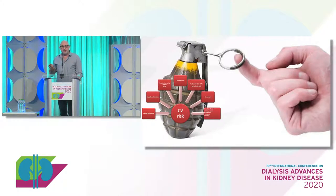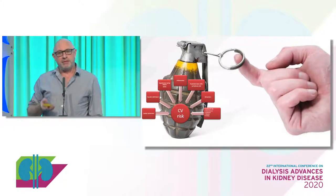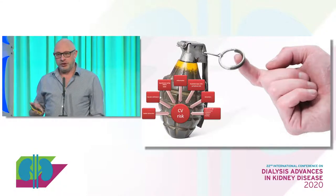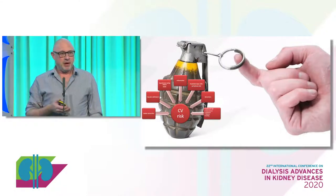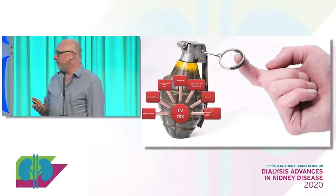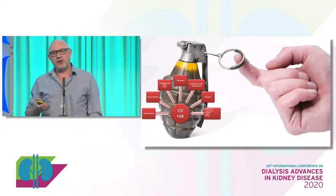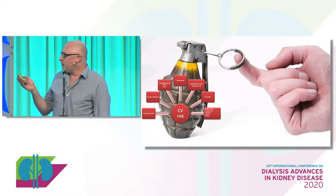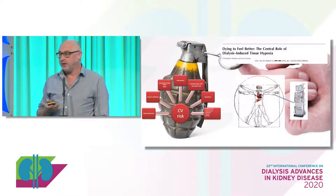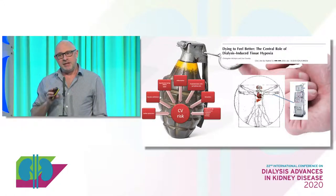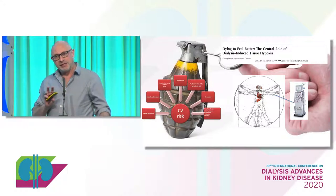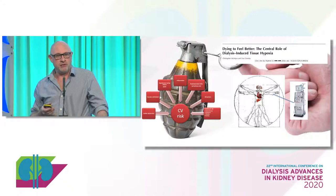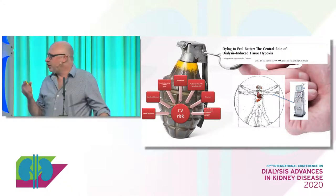Having uremia, you are already primed for demand ischemia through a whole series of structural and functional abnormalities that are part of being uremic and the diseases that lead to uremia. So our patients, when they arrive on day one, are already a hand grenade. We then unfortunately do the next thing, which is we pull the pin out of the hand grenade by putting them onto dialysis. We take these vulnerable vascular beds and subject them to the circulatory stress of the rapid removal of water and salt and challenge them hemodynamically.